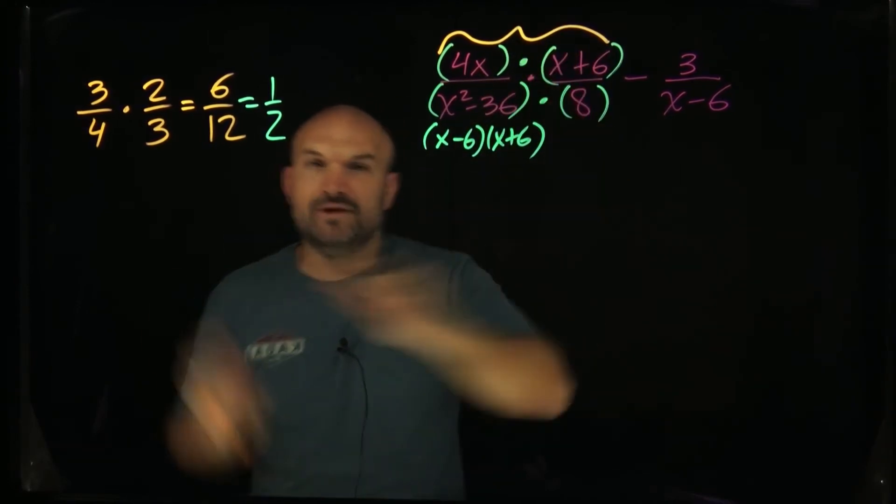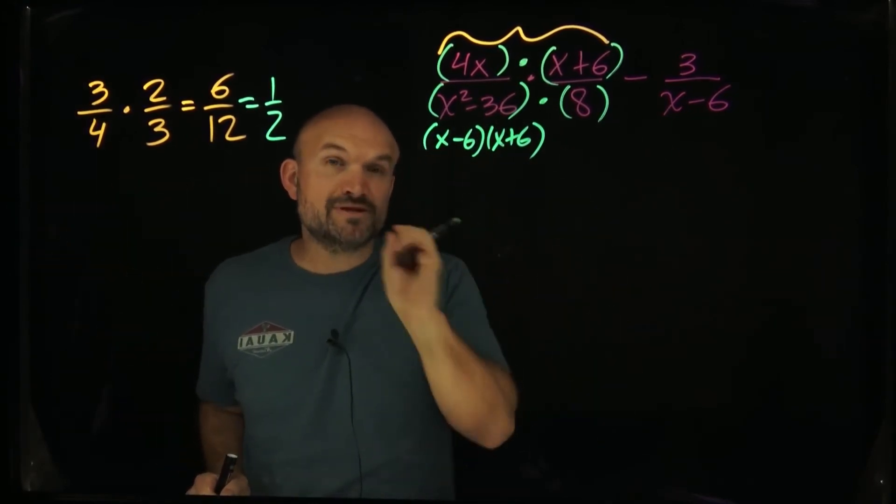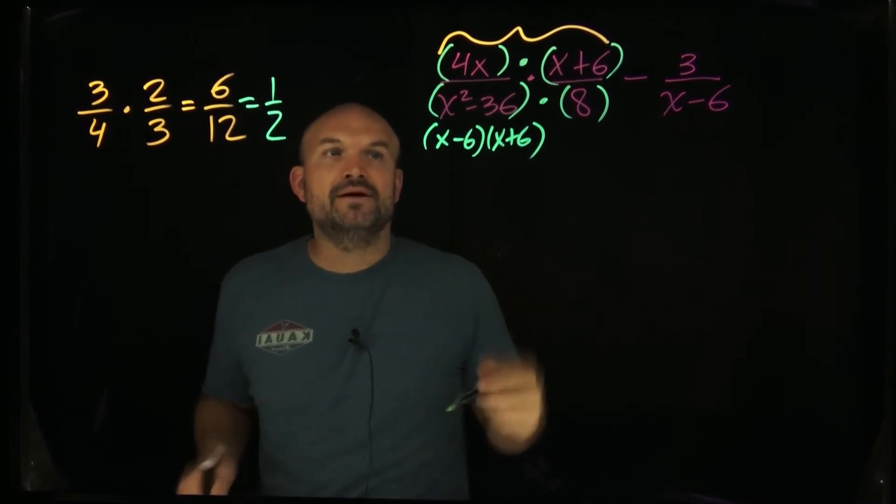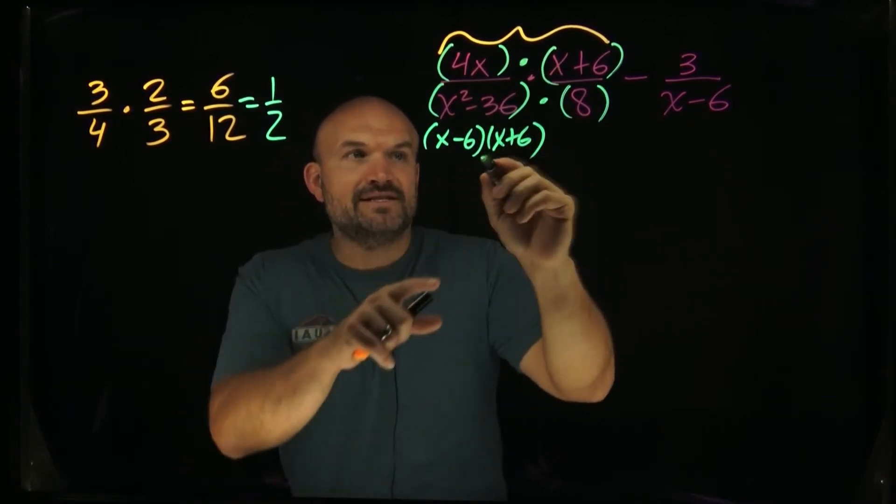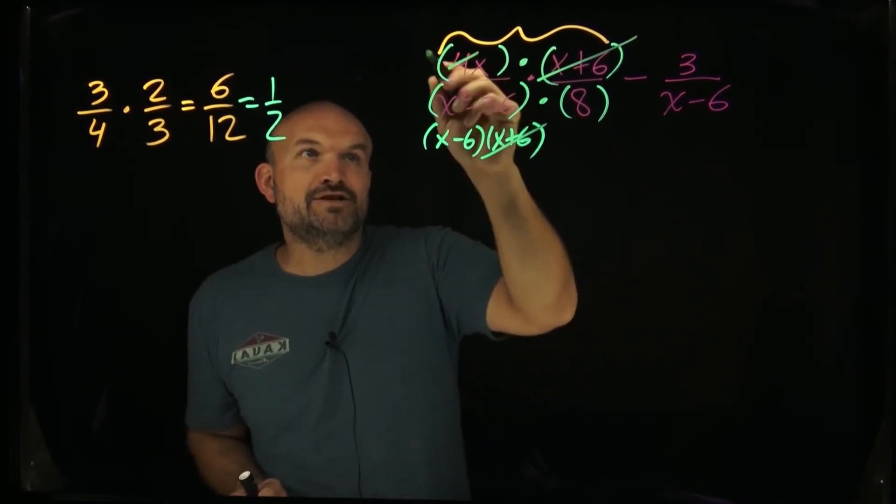You can put a multiplication in the numerator, denominator. If you multiply straight across, all these terms are separated by multiplication. That's important because when terms are separated by multiplication, you can reduce them. I can now divide out the x plus 6s in the numerator and the denominator, and I can reduce a 4 over 8 into a 1 half.